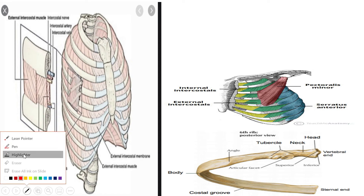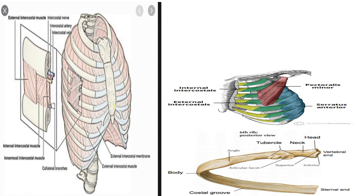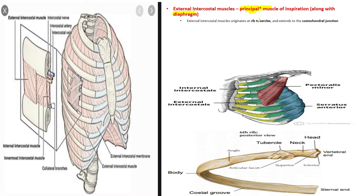Let's get started. Today we're going to be talking about the intercostal muscles as well as the neurovasculature of the thorax. First, let's talk about the external intercostal muscles, which are principal muscles of inspiration. There's another principal muscle of inspiration known as the diaphragm.